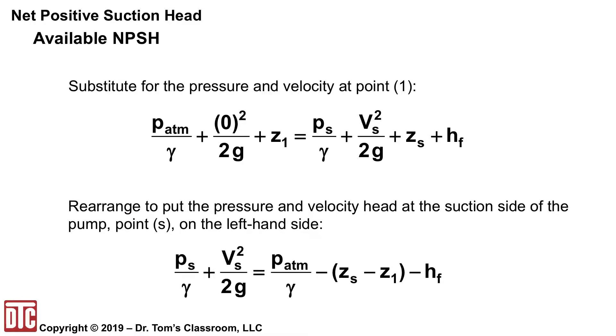Now what we do is we rearrange to put the pressure head at the suction side on the left hand side. So we've got PS over gamma plus VS squared over 2g equals all the other terms. P atmosphere over gamma minus the ZS minus Z1. We could reverse that, make that a plus, but it really works out better. Actually, if you just leave it like this, you may have a lot of different negatives, but this works out better. And then minus the HF.